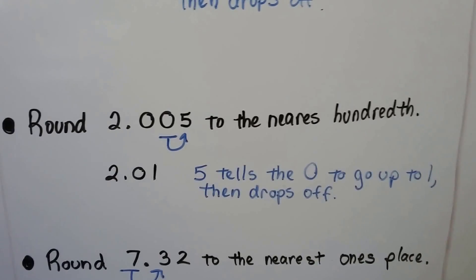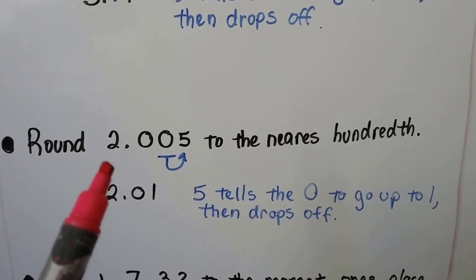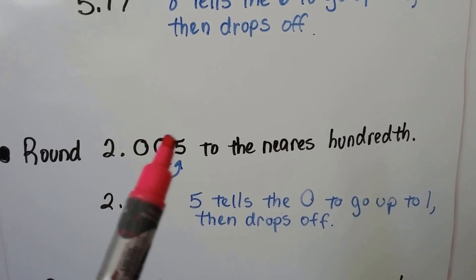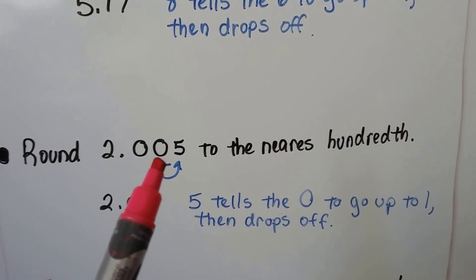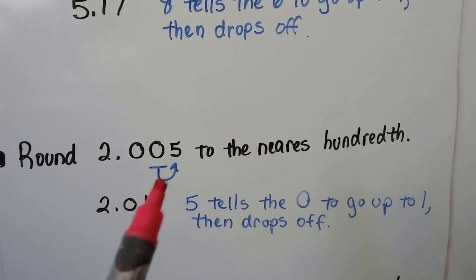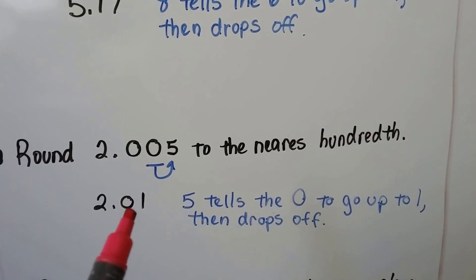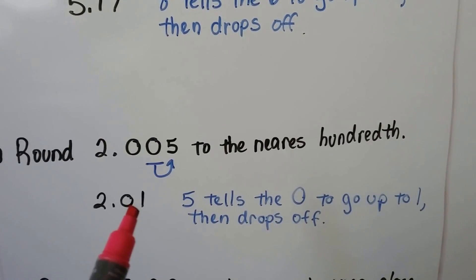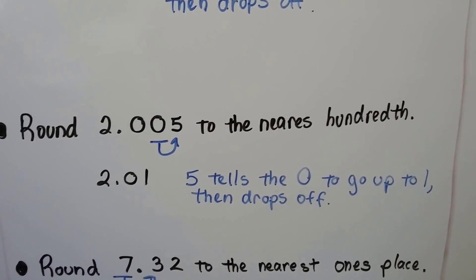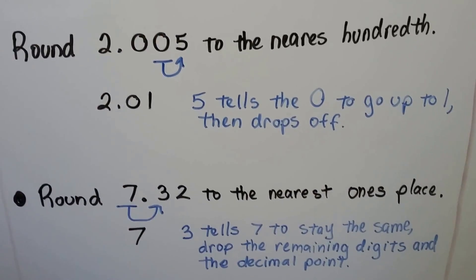For this one, it says round to the nearest hundredth. We have 2 and 5 thousandths. The 5 tells the digit to go up. This is the hundredths place that we're rounding to — the 5 tells the zero to go up. So we have 2 and one hundredth, and the 5 drops off. So even if it's a zero, it can still tell it to go up by 1.